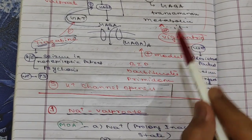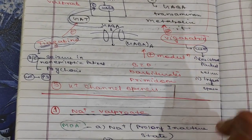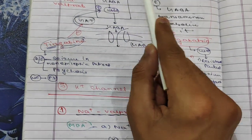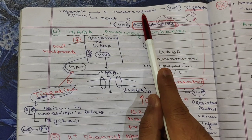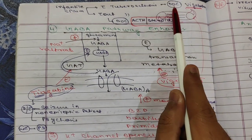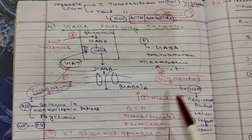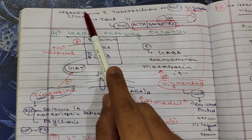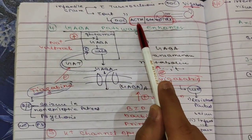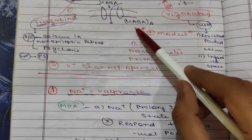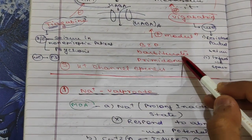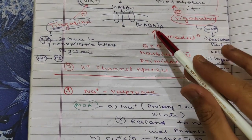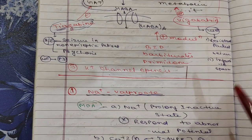Vigabatrin is the drug of choice for infantile spasm associated with tuberous sclerosis. For infantile spasm without tuberous sclerosis, the drug of choice is ACTH or steroids. We can also modulate GABA-A receptors using benzodiazepines, barbiturates, and primidone.